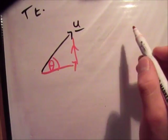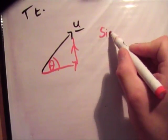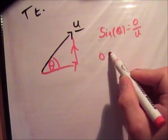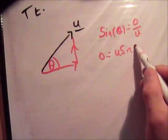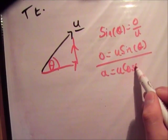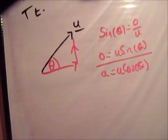If you call this theta, you know that sin theta is equal to the opposite over the hypotenuse, which is u. Therefore, the opposite is equal to u sin theta. And similarly, the adjacent is equal to u cos theta.